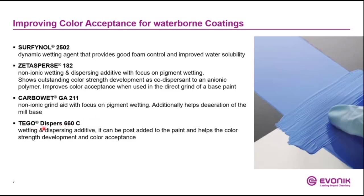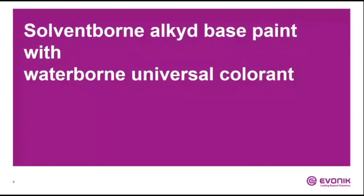The last one, Dego Disperse 660C, is a wetting and dispersing additive. It can also be post-added, so this is a high-polymeric additive that can be post-added to the paint and helps to improve color strength development and color acceptance. This is especially critical for the color acceptance of a universal colorant — a waterborne universal colorant.